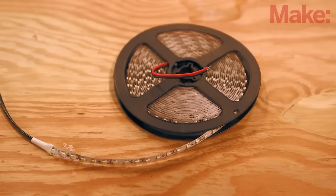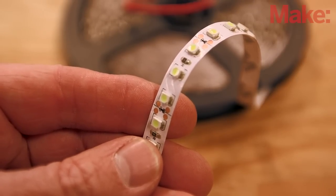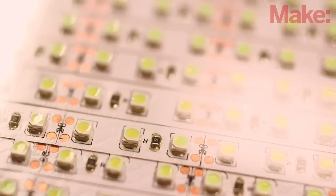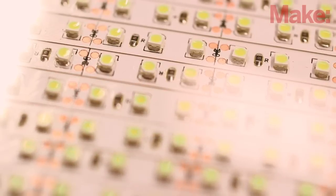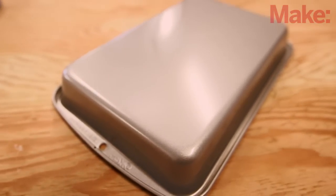The core of this project is the adhesive-mounted LED strip lighting. Ordinarily, these are sold in one long spool, but we'll be cutting and re-soldering them into a rectangular panel, and then we'll repurpose a brownie pan to use as the housing.